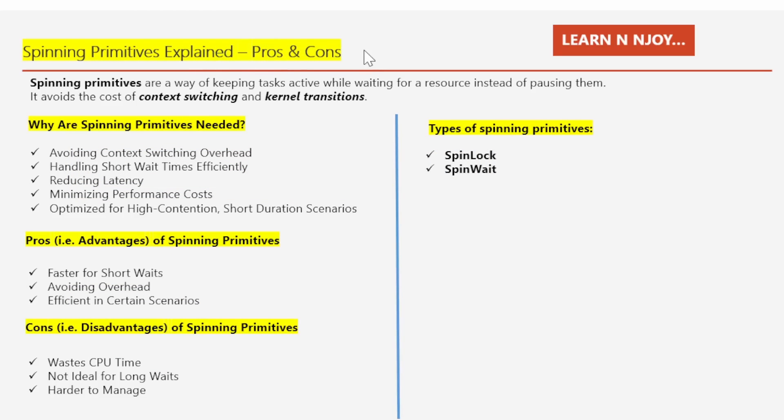So let's first understand what spinning primitives are. Spinning primitives are a way of keeping tasks active while waiting for a resource, instead of pausing them. It avoids the cost of context switching and kernel transition. In other words, spinning primitives are techniques used in parallel programming when multiple tasks or threads are running at the same time and need to access shared resources like memory or data. Instead of putting a task to sleep when it has to wait, a spinning primitive keeps it active and continuously checks if it can access the resources it needs. This process is called spinning.